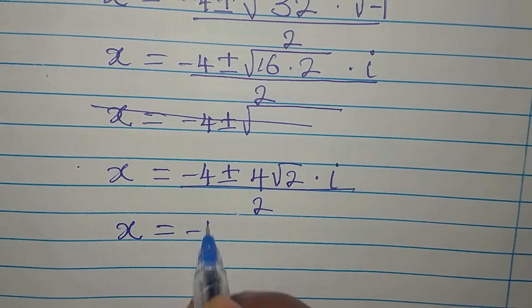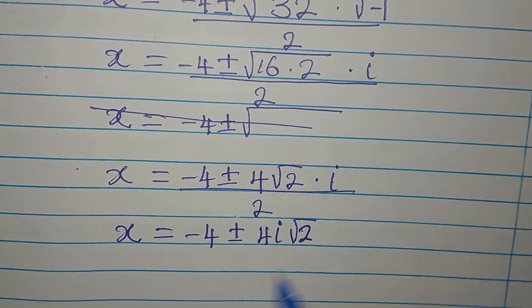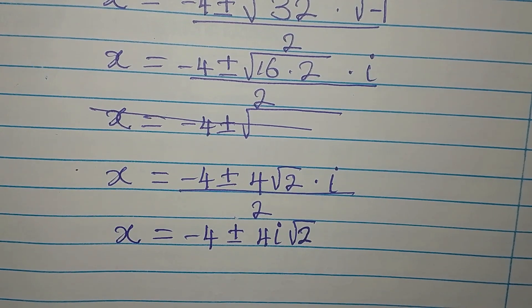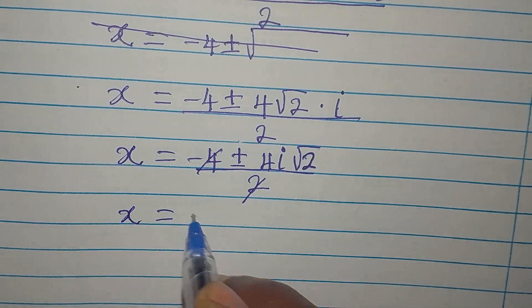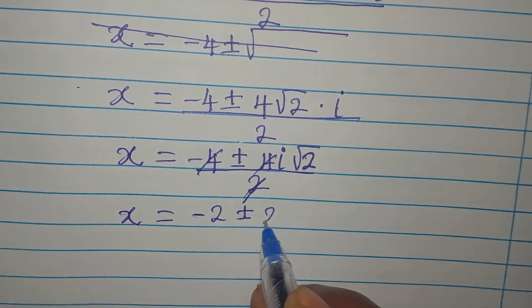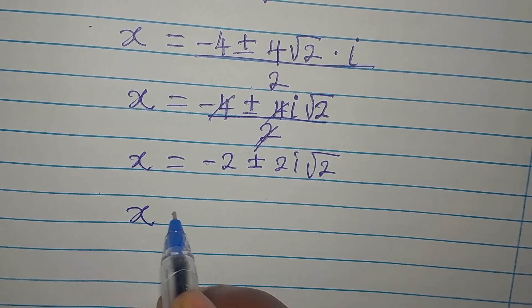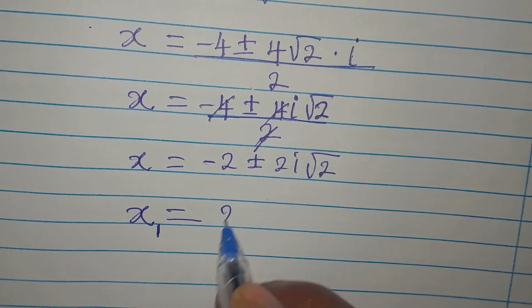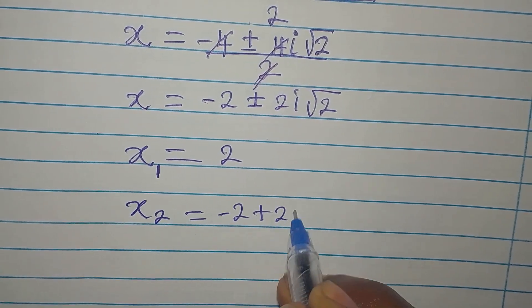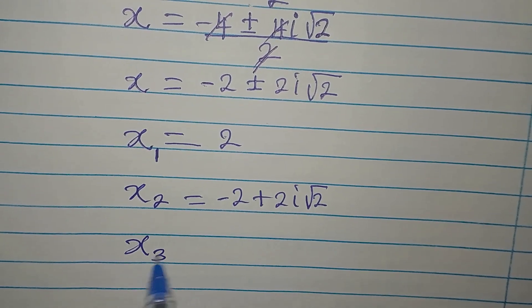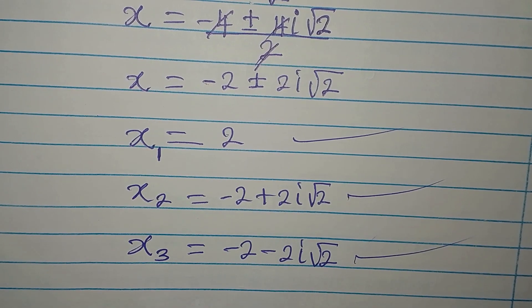Dividing everything by 2, x = -2 ± 2i√2. So the three solutions to the equation are: x₁ = 3, x₂ = -2 + 2i√2, and x₃ = -2 - 2i√2. These are the three solutions to the original equation.